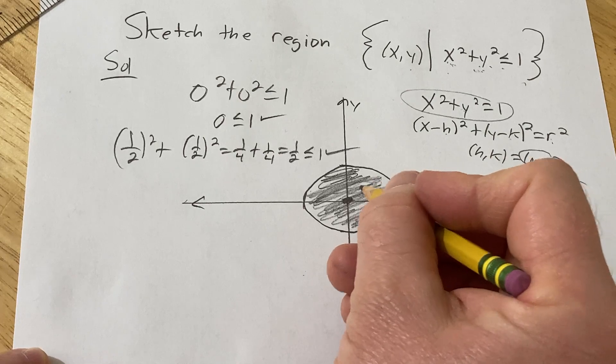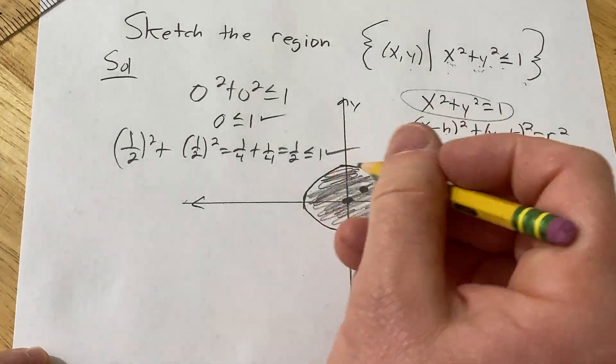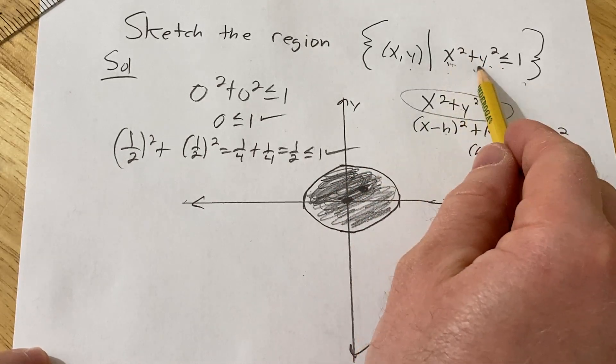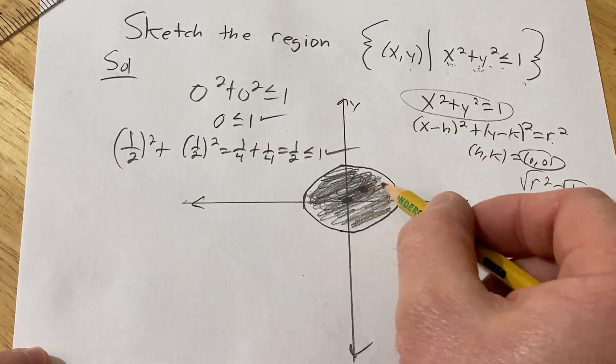And basically every point is going to be there. Every point such that x squared plus y squared is less than or equal to 1. So it's everything inside the circle.